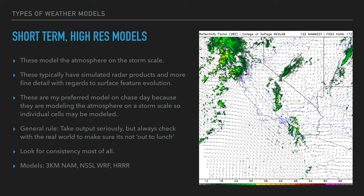Short-term high-resolution models model the atmosphere on the storm scale — you can actually see individual storms. On a dry line day you can see roughly where storms might form later that day. They typically have simulated radar products with fine detail and can show surface feature evolution. On chase day these are my preferred models. Take the output seriously but always check the real world to make sure it's not way off — never take it literally.